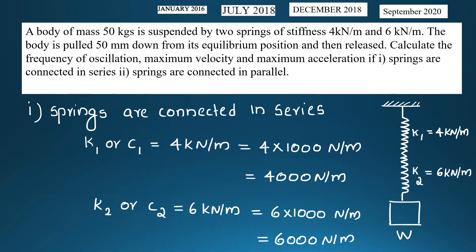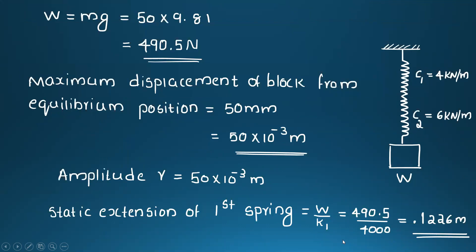For springs in series: k₁ equals 4 kN/m equals 4000 N/m, k₂ equals 6 kN/m equals 6000 N/m. Weight W equals mass times g equals 50 times 9.81 equals 490.5 Newton, approximately 419.5 Newton. Amplitude r equals 50 mm equals 50 × 10⁻³ meter.